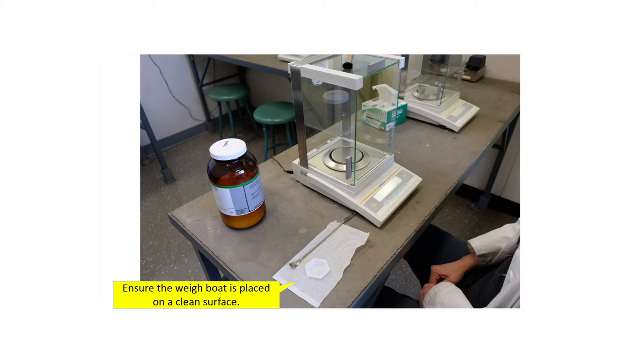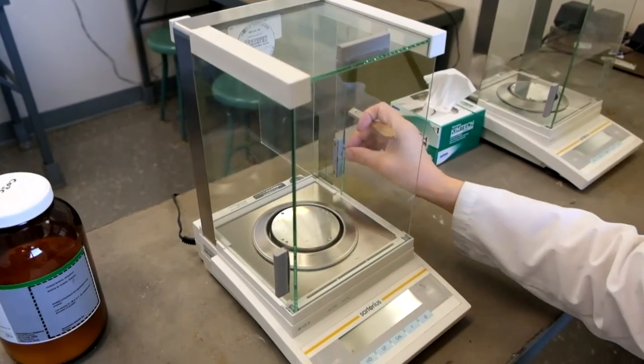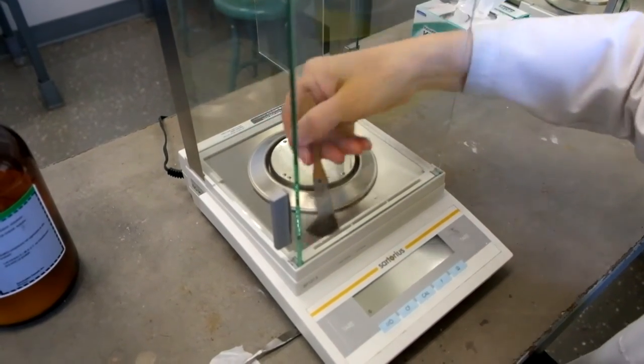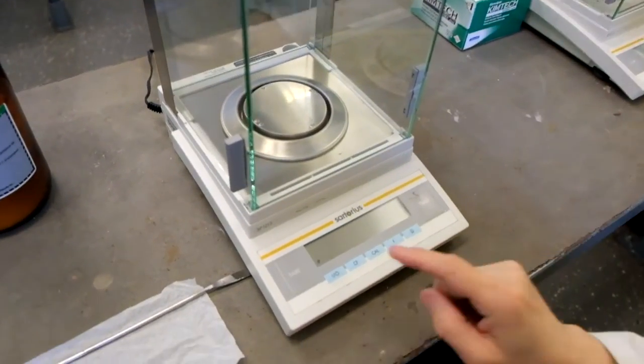Ensure the weigh boat is placed on a clean surface. Prior to turning on the balance, clean the inside of the balance chamber with a brush. Turn on the balance.